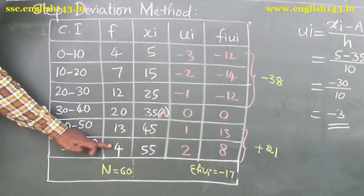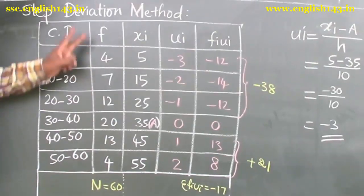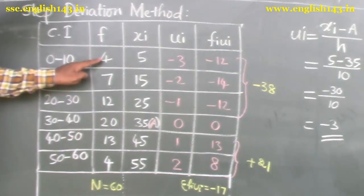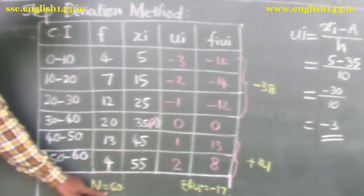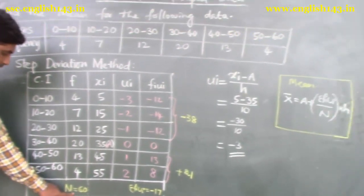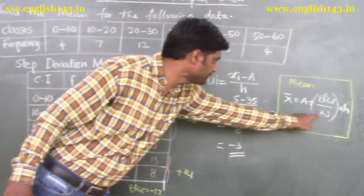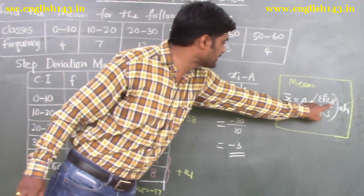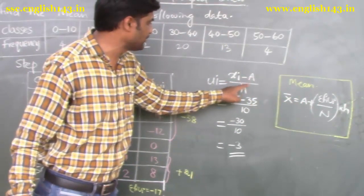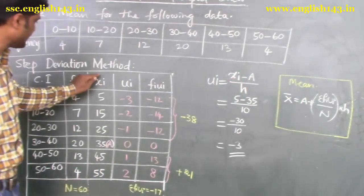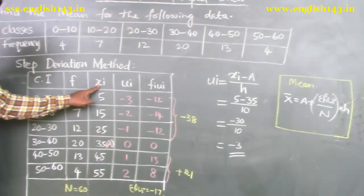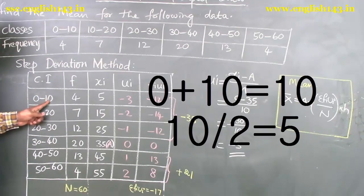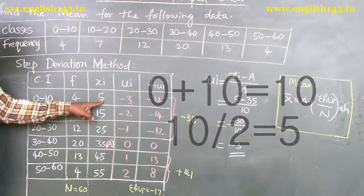The given frequencies are 4, 7, 12, 20, 13, 4. Adding all frequencies: 4 + 7 + 12 + 20 + 13 + 4 = 60. This total is denoted by n, so n = 60. For u, we know that ui = (xi − a) / h. For xi, we create another column of mid values: for 0 to 10, the mid value is (0 + 10) / 2 = 5.